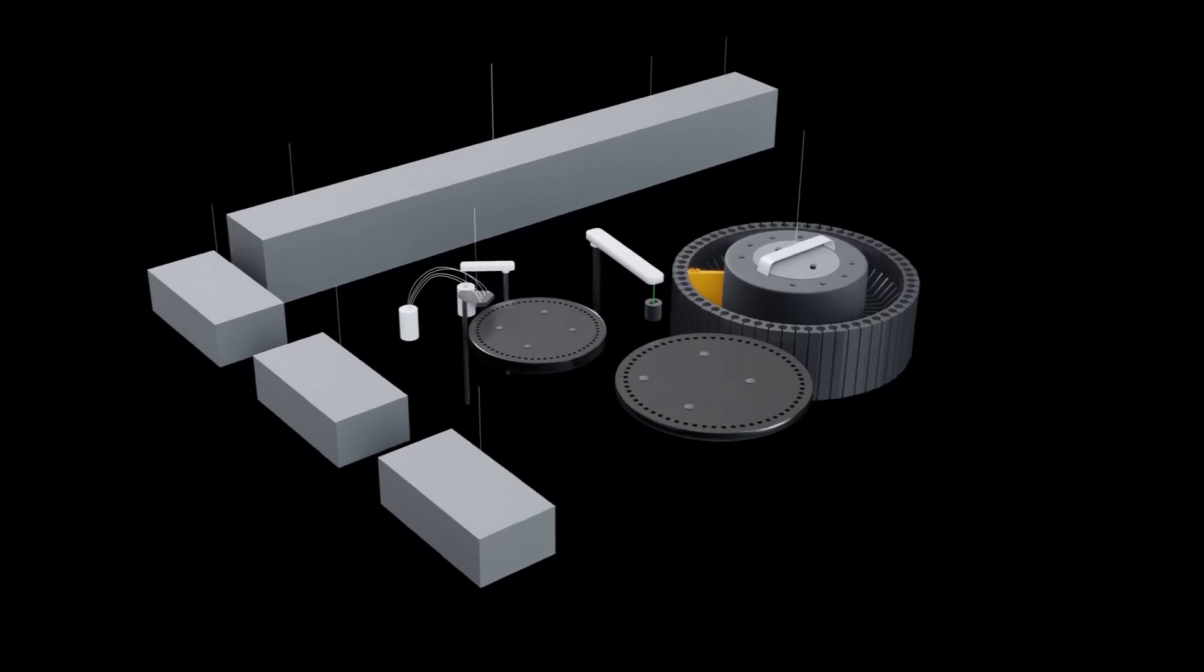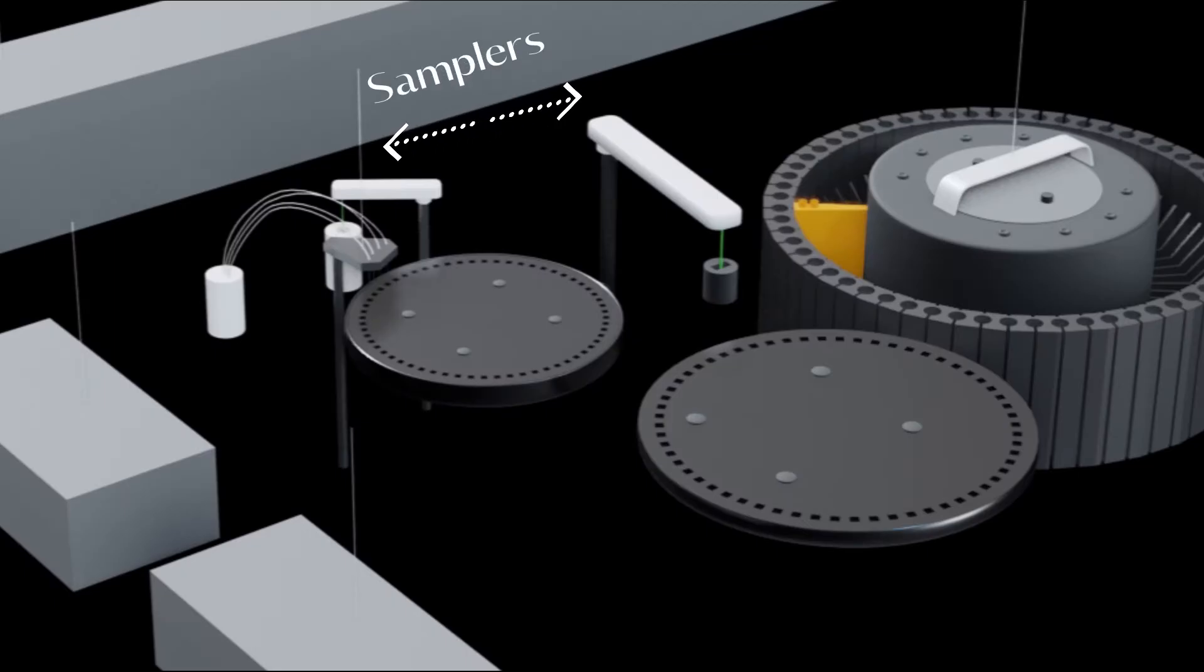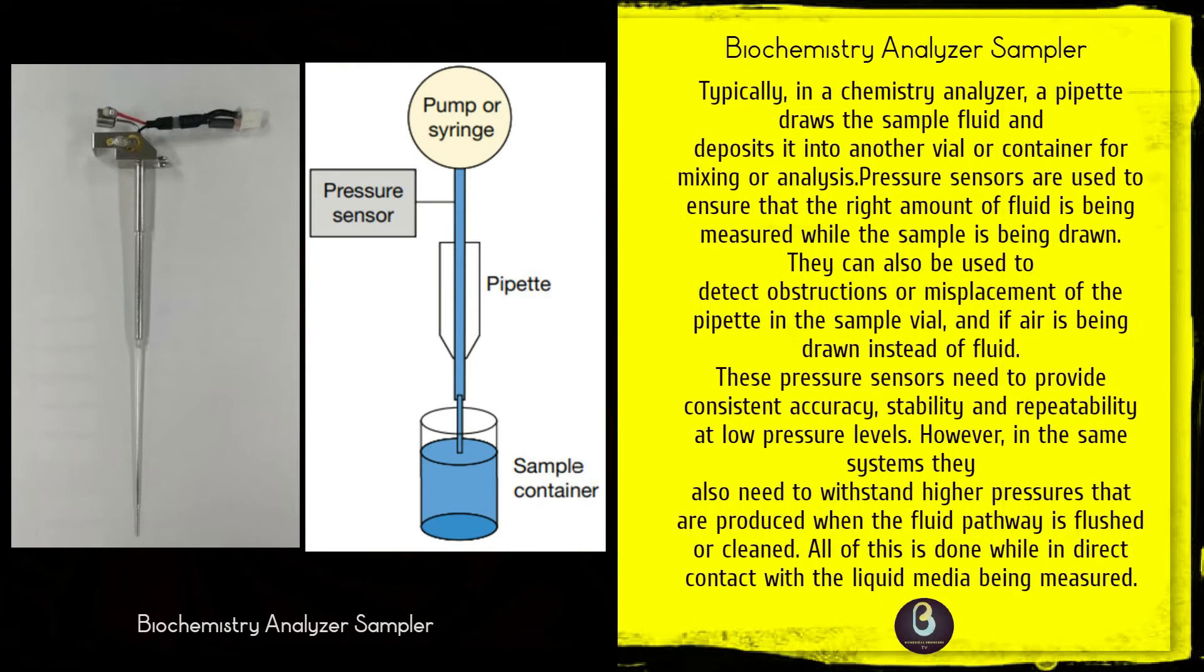Let's look into the sampler first. This module holds the batch of samples awaiting analysis in separate cups on a circular tray which is rotated at intervals. A probe connected by plastic tubing to the proportionating pump enters each sample serially.